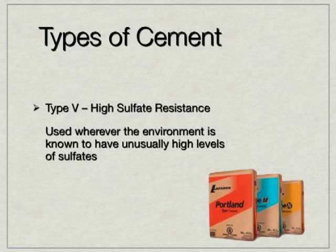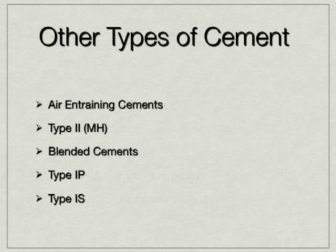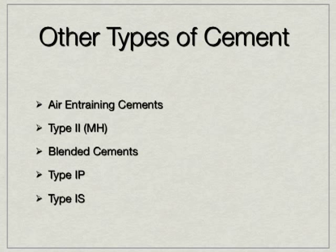Type 5 cement is high sulfate resistant cement. Like type 2, it fights the deteriorating effects of sulfates in soils and water. However, type 5 is used wherever the environment is known to have unusually high levels of sulfates. That covers the 5 basic cements. However, there are many other different types. For example, there are type 1A, 2A, and 3A — these are air-entraining cements. Type 2 MH is a moderate heat type 2. Blended cements typically contain various supplemental cementitious materials such as fly ash, slag, or micro silica. Type IP is a pozzolanic cement while type IS would have slag added to it. These only begin to touch the surface of the various types of cement that exist in the market.